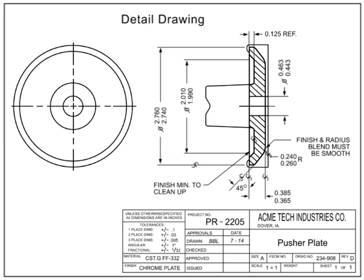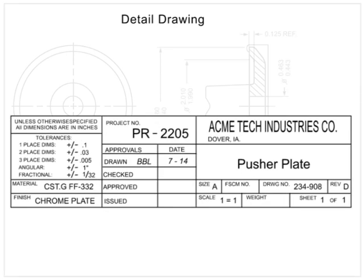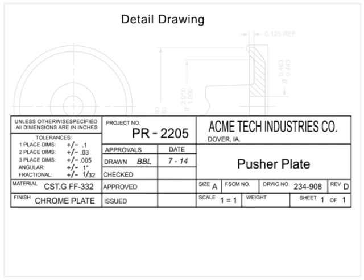Machine drawings can be developed using a cast part as the original material. In this drawing, the casting from the last example was used as the starting material. This machining drawing will remove material from the original casting and add the finishes required to produce a final product with its own unique part number. Only the dimensions necessary to convert the original cast part into the new part are required; the casting dimensions are not shown.